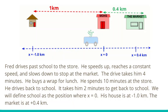It takes him two minutes to get back to school. We will define the school as a position of zero, x equals 0. So the school position x equals 0. His house is going to be at negative 1 kilometer, and the market is going to be at 0.4 kilometers.